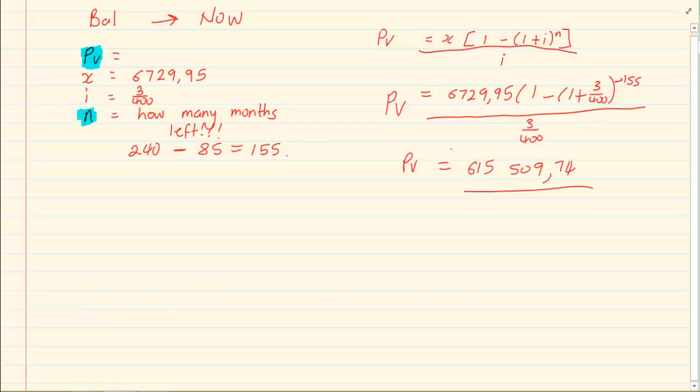You would have PV which is your present value. So how much do you owe the bank right now? You owe them 615,509, 74 cents. So this is your balance of the loan. Balance of the loan is exactly like present value. Thank you for watching.